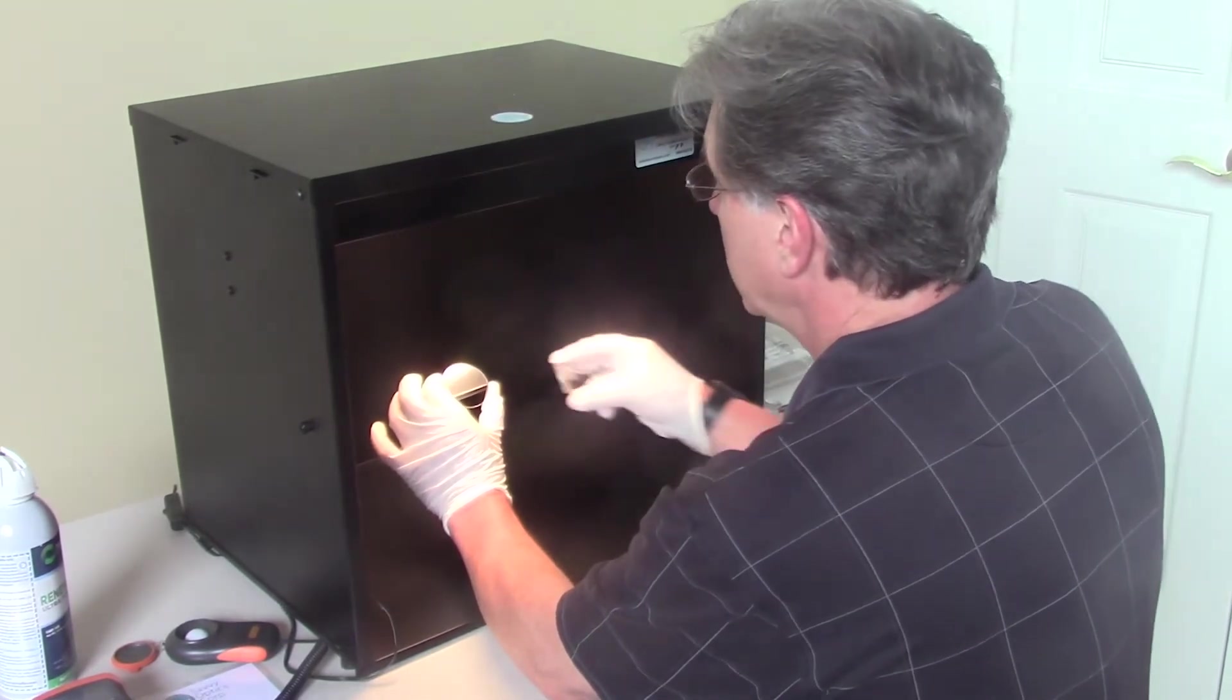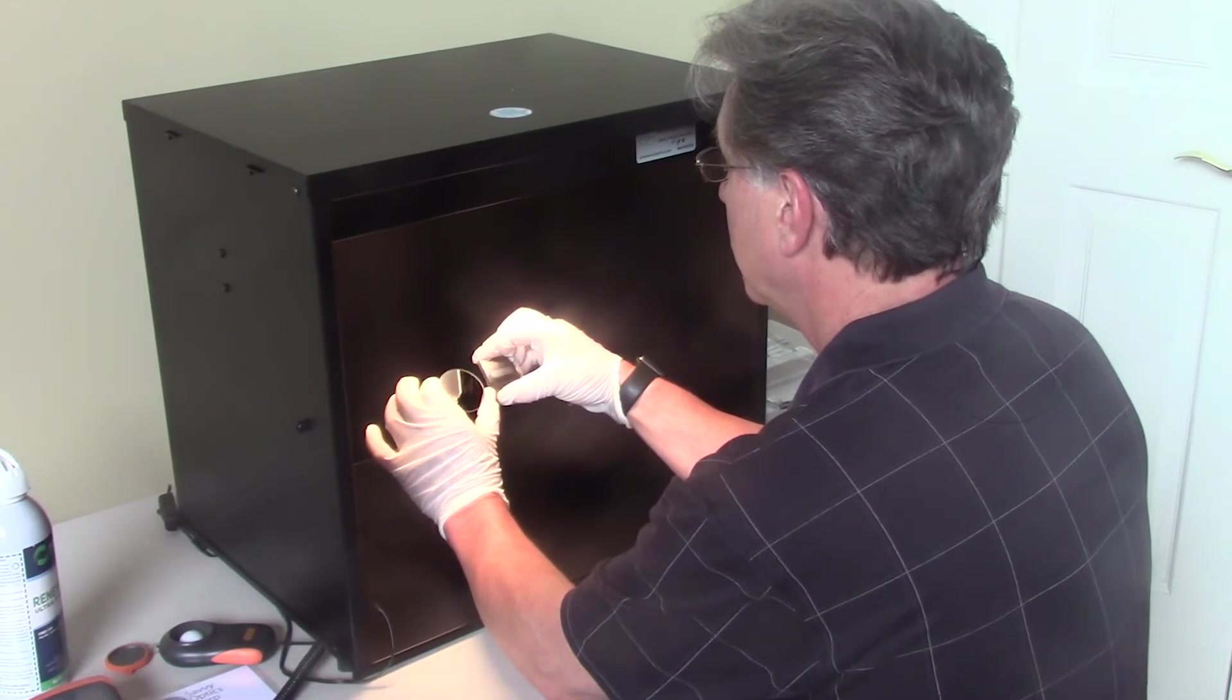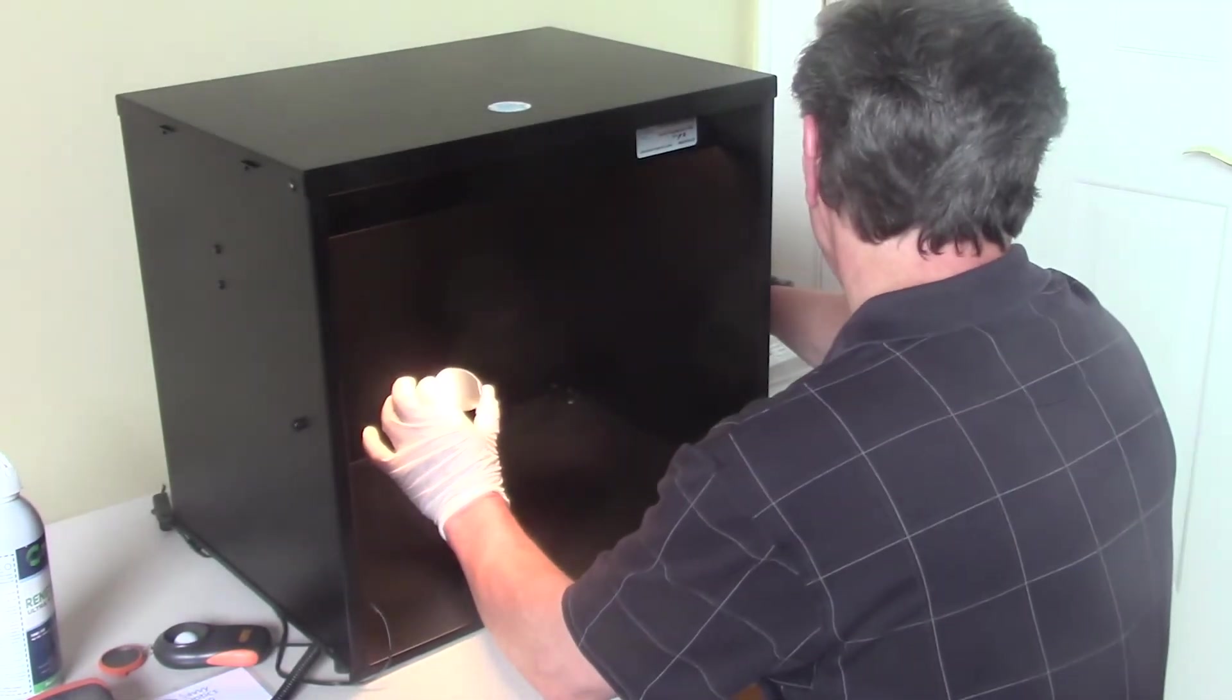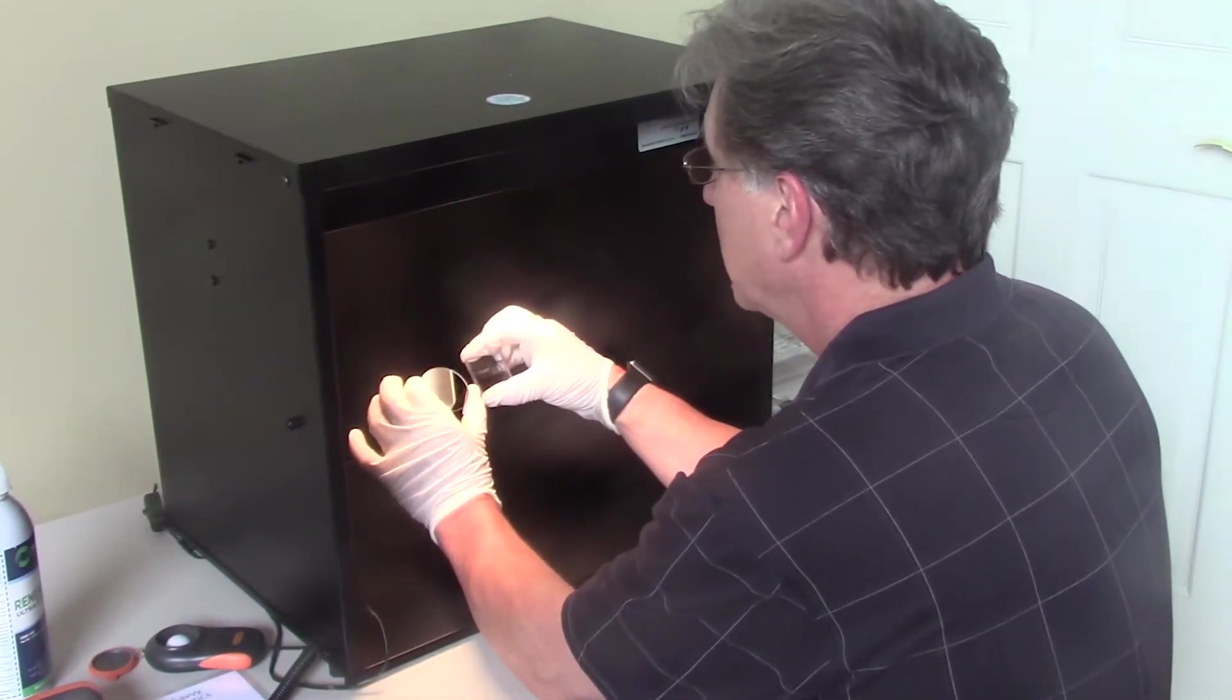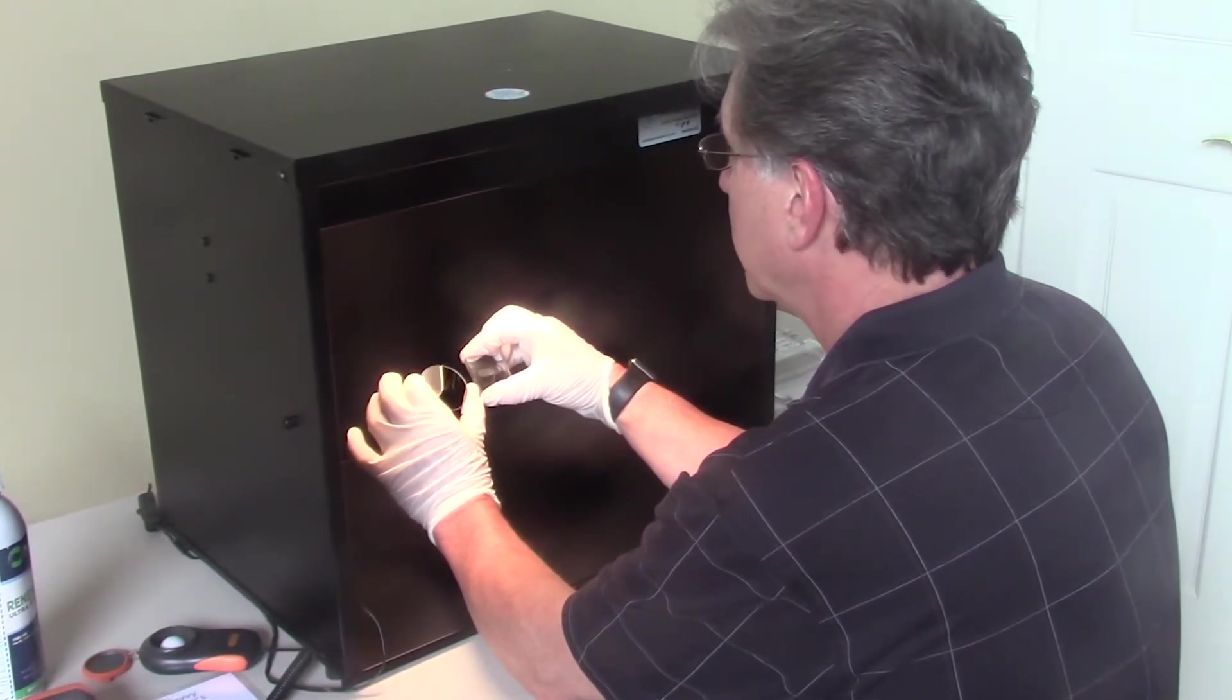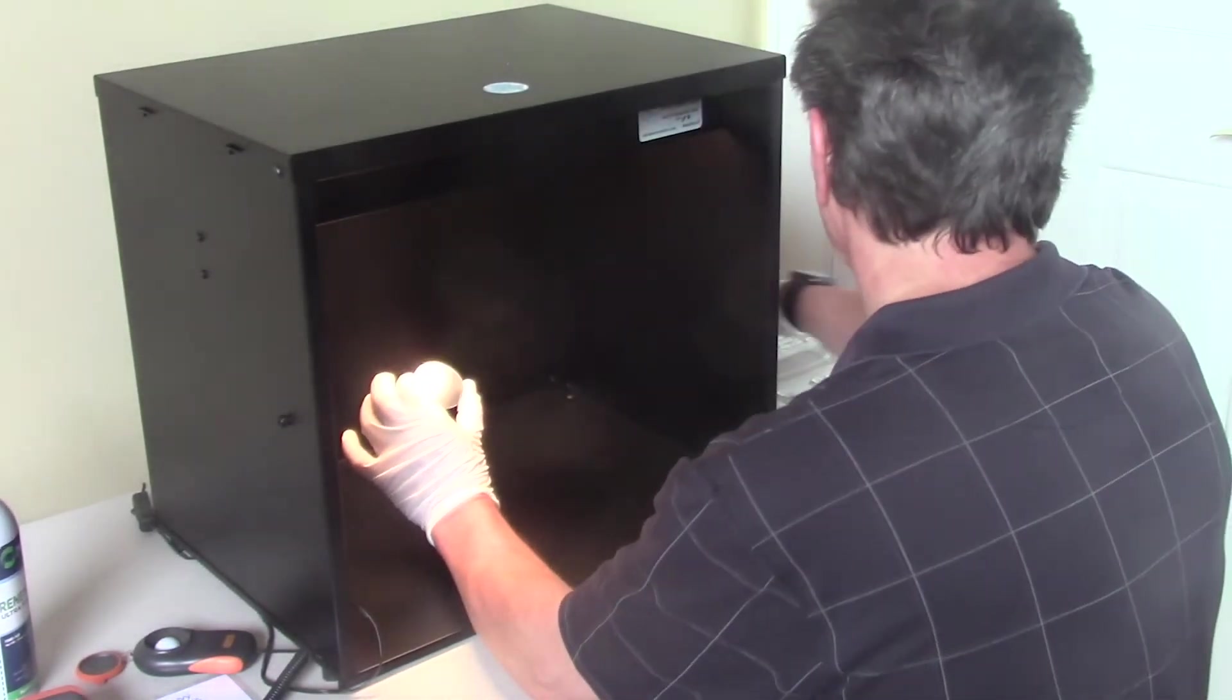I'll now compare that visually with the Comparison Standard. This is the number 60, and I can see that that scratch is more pronounced than the number 60. It's easier to see, it's more visible. And it's much closer to the number 80, and say it's just a little bit less visible than the number 80 standard. So I would call that a number 80 scratch.